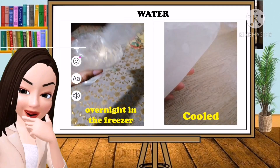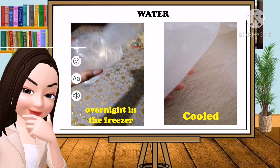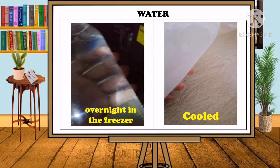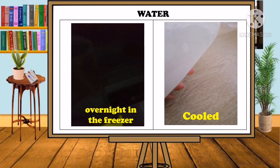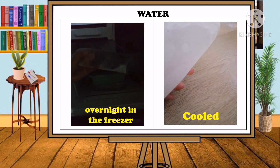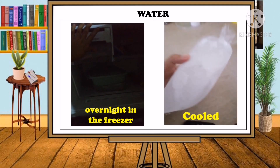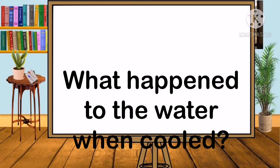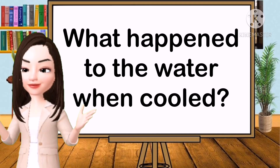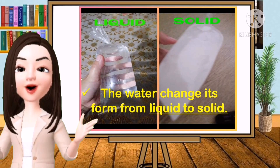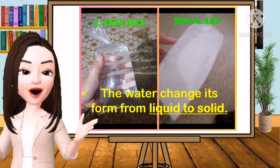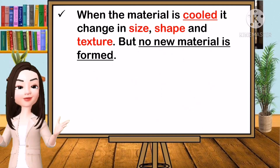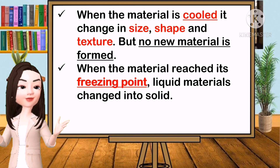Observe what will happen to the water when placed in the freezer overnight. What happened to the water when cold? The water changed its form from liquid to solid. When the material is cold, it changes in size, shape, and texture, but no new material is formed. When the material reaches its freezing point, liquid materials change into solid.